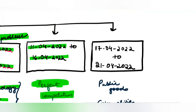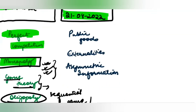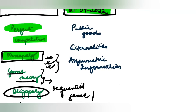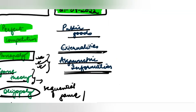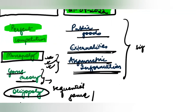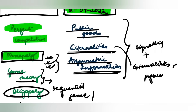Finally, from 17th of April to 21st of April, we should focus on three important topics: public goods, externalities, and asymmetric information. In particular, we'll do a numerical on signaling, a numerical on externality including finding the Pigouvian tax, and we'll also discuss a few ways to solve the problem of public goods.